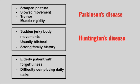Next is an elderly patient with forgetfulness who has difficulty completing daily tasks. This is Alzheimer's disease. Alzheimer's disease tends to cause problems with daily tasks such as going to a grocery store or finding their way home. This is caused by a buildup of beta-amyloid and tau protein.